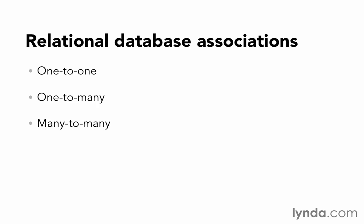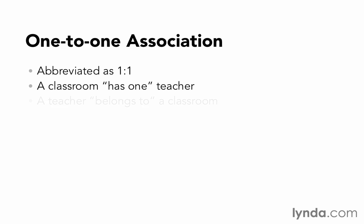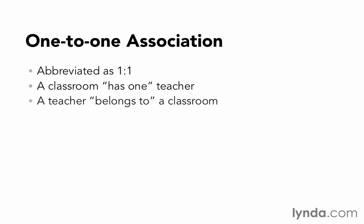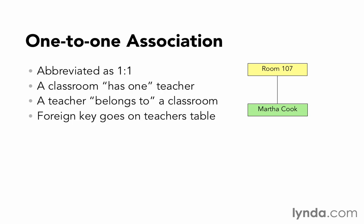Imagine a school. Each classroom in the school is assigned a teacher. The teachers don't change classrooms, and they teach four classes per day. The students change classrooms throughout the day as they move from course to course. An example of a one-to-one relationship would be the relationship between the classroom and the teacher. A classroom has one teacher, and a teacher is assigned to the classroom. In this case, the foreign key goes on the teacher's table. If we wanted to diagram it, it might look something like this. We've got the parent, which is the classroom — room 107 — and then the teacher, Martha Cook, which is the child record.